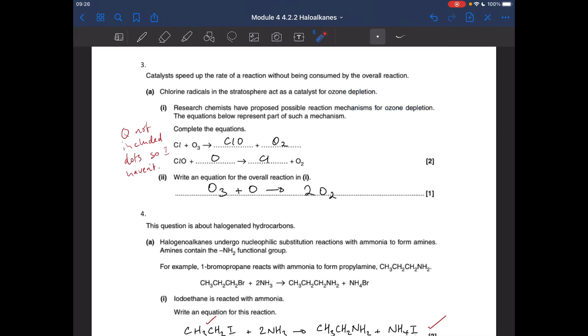Question number three. Chlorine radicals in the stratosphere act as a catalyst for ozone depletion. So basically, we've got to complete these two equations. These are propagation equations. A bit unusual - OCR haven't used the dots on the chlorine radical. Sometimes they do, they haven't here, so I haven't.